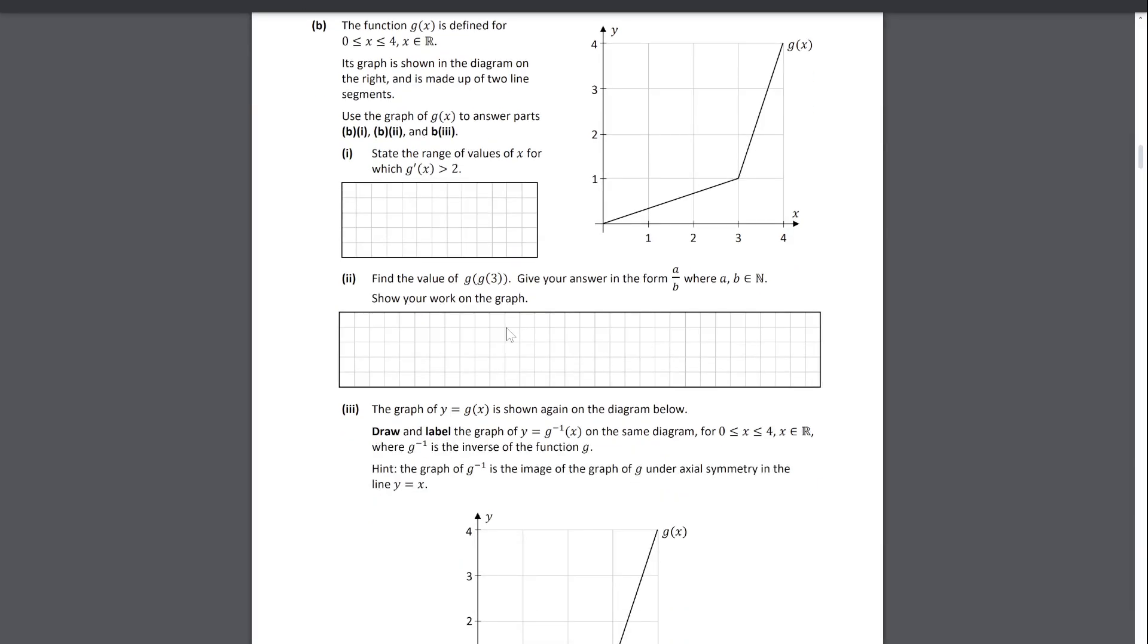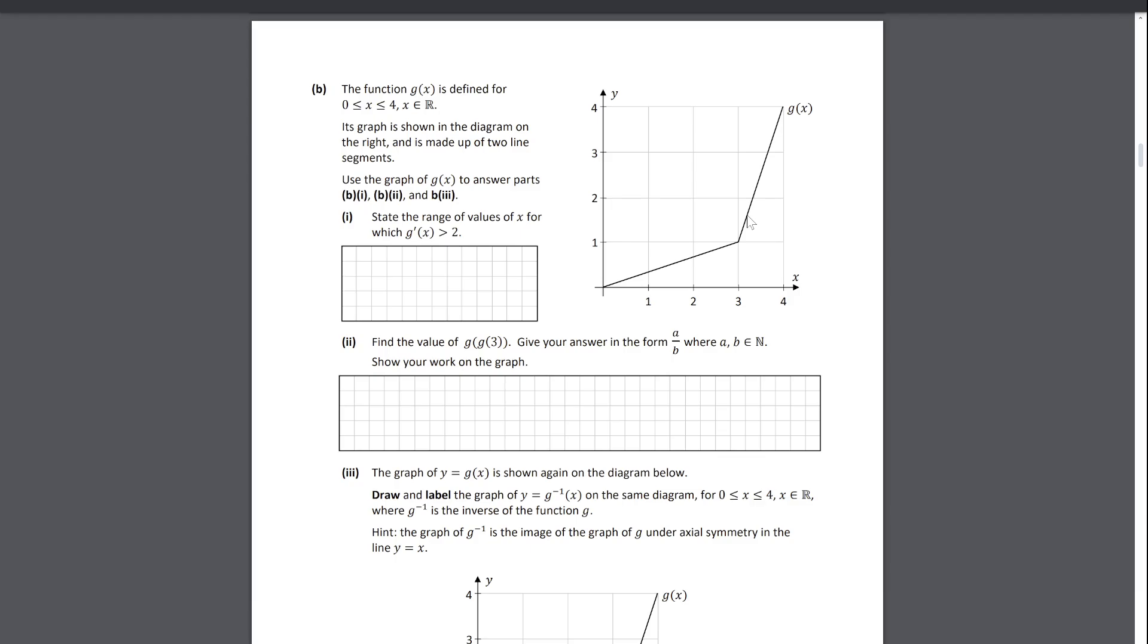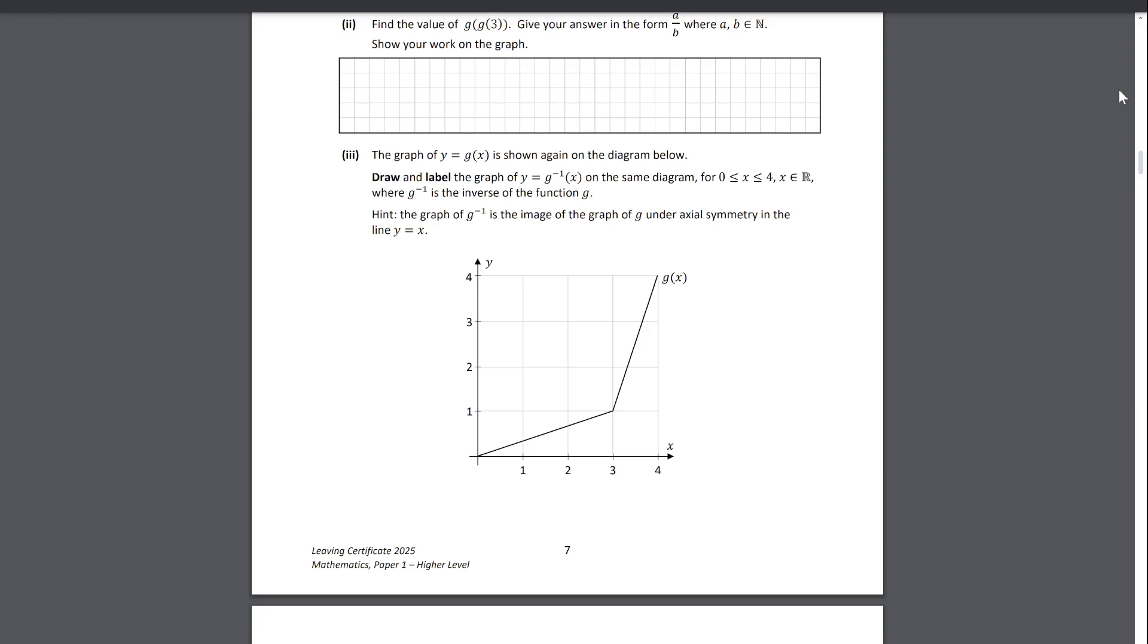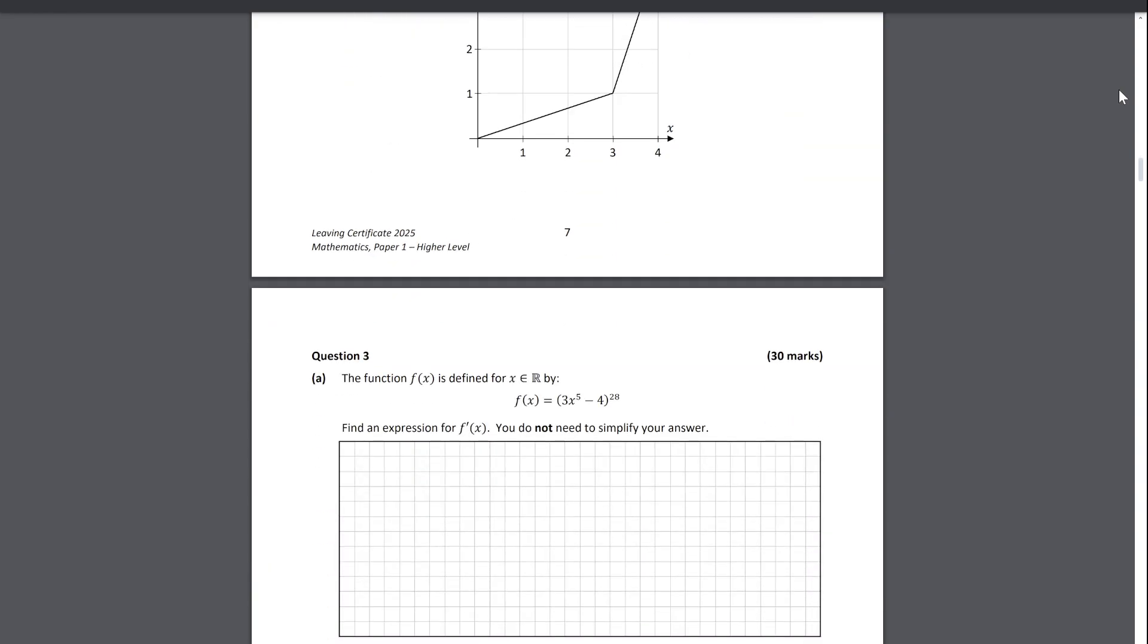Then we have this question where it's a bit of an awkward looking functions question at first until you actually go ahead and do it. I think g of three you get one, and g of one you can use the equation of a line here, and then understanding what the inverse function does - that's reflecting through the line y equals x.